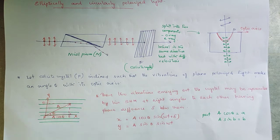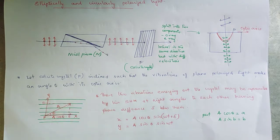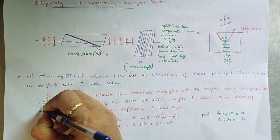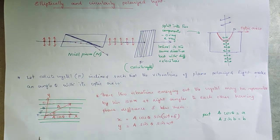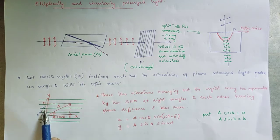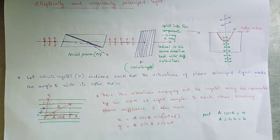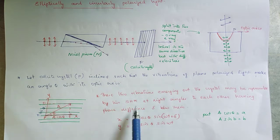Let A be the amplitude of the vibrations of the incident plane polarized light. It can be resolved into two components: A cos theta and A sin theta — that is, along the optic axis (PE) and perpendicular to the optic axis (PO). The vibrations parallel to the optic axis form the extraordinary ray, and the vibrations perpendicular to the optic axis form the ordinary ray. These two vibrations emerging from the crystal may be represented as two simple harmonic motions at right angles to each other, having a phase difference.